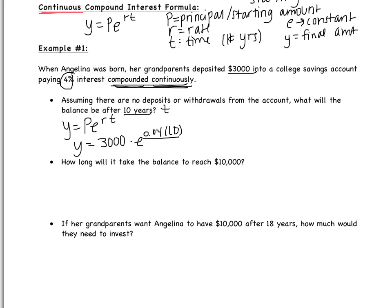P is the starting amount — the grandparents deposited $3,000. The rate is 4%, but we convert that to a decimal: 0.04. Then I multiply by T = 10 years. Simplifying the exponent: 0.04 times 10 equals 0.4, so Y equals 3,000 times E to the 0.4. Putting this in the calculator — 3,000 times E to the power of 0.4 — I get approximately $4,475.47.